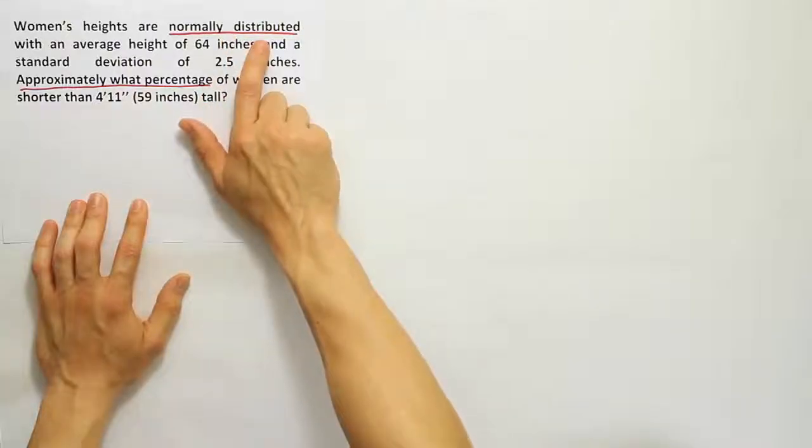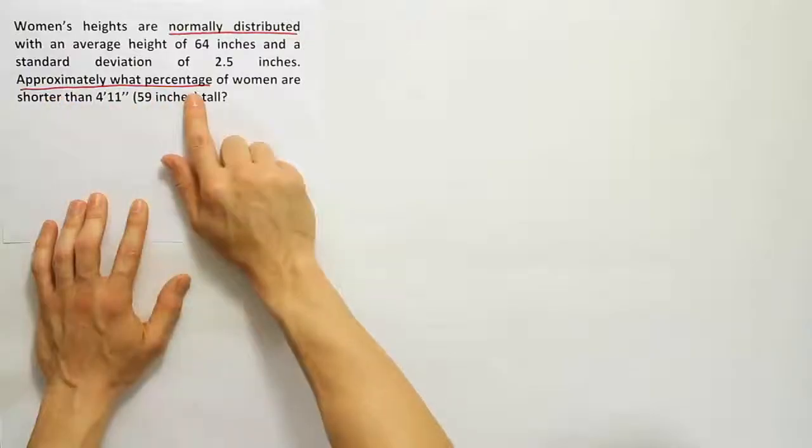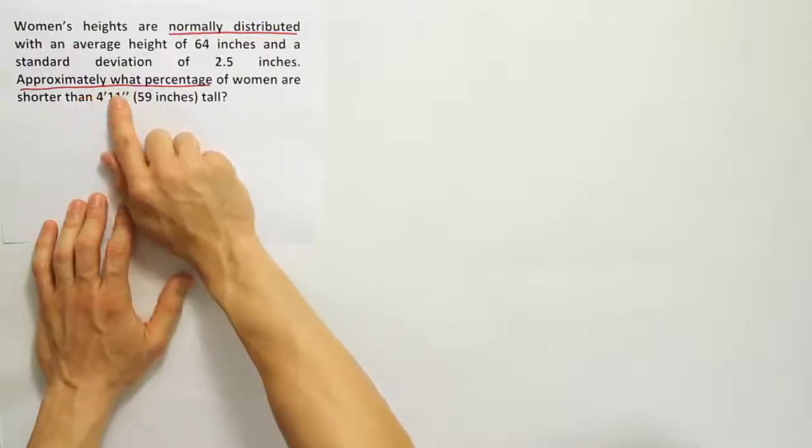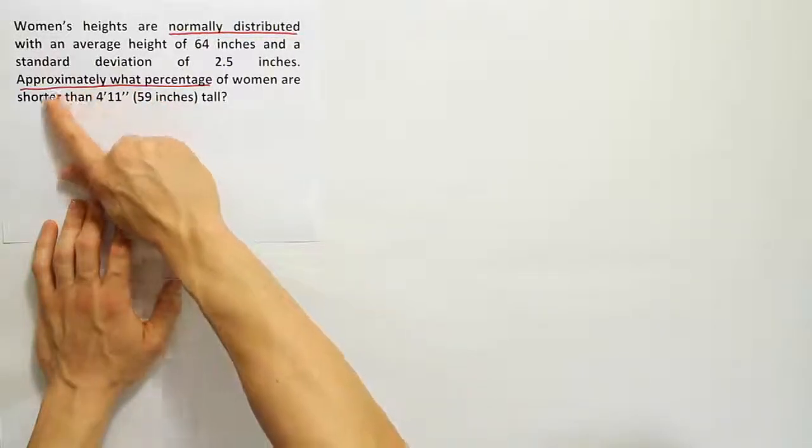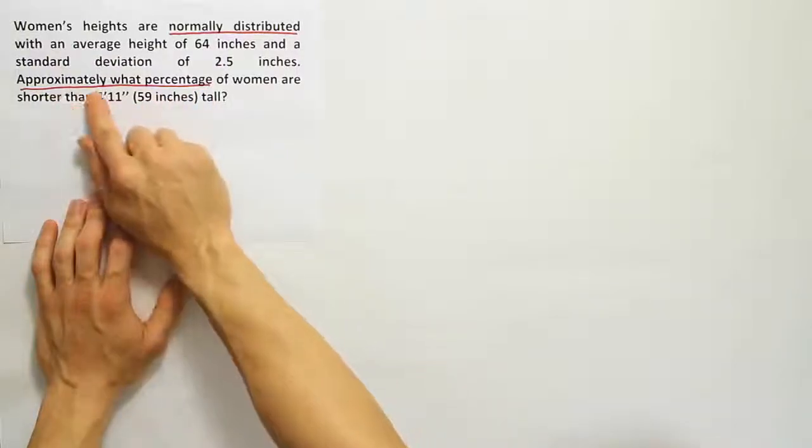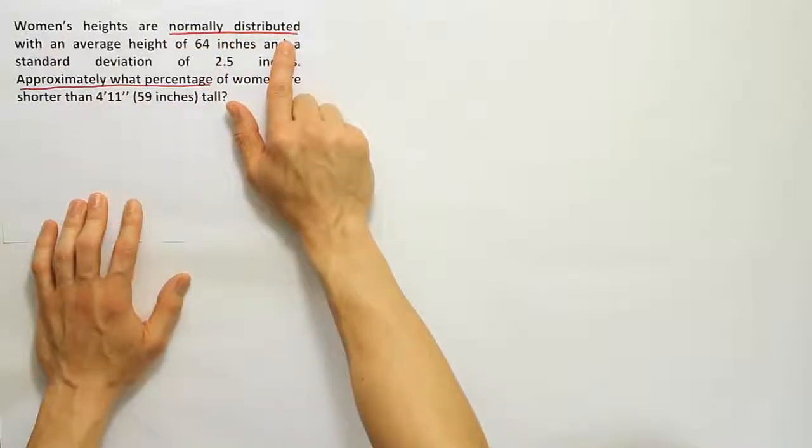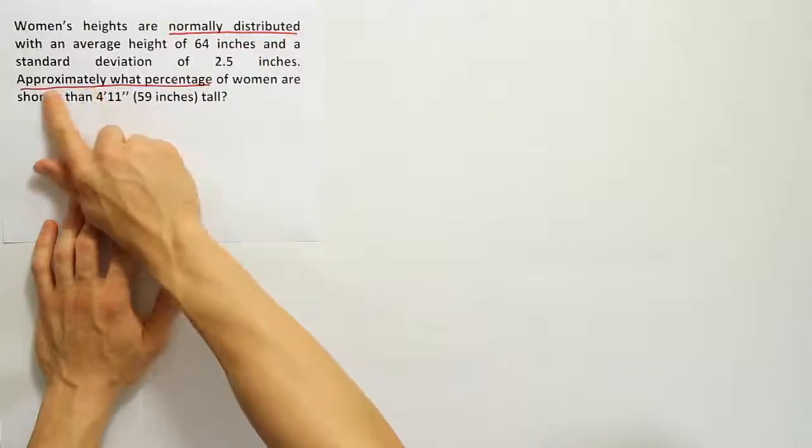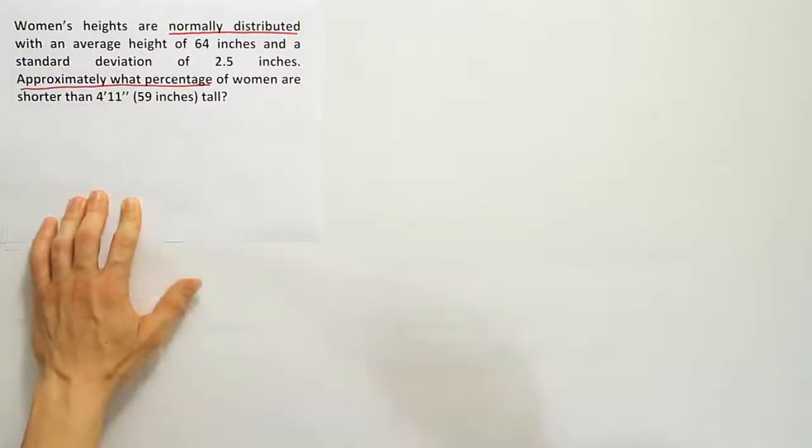This approximately what percentage is another key phrase to indicate empirical rule. So the fact that we're dealing with something that's bell shaped and they ask approximately what percentage, as opposed to the minimum percentage or at least what percentage, those phrases when it says minimum or at least correspond to Chebyshev's theorem. Approximately is the language we use when we're dealing with the empirical rule and normally distributed is required for that rule. You must be using a bell curve to use the empirical rule. And if you combine that with this phrase here, to me it tells me that this is an empirical rule problem.